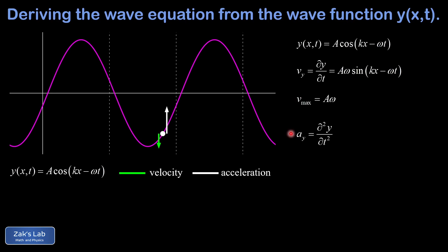Next we take a second derivative of y with respect to time — the rate of change in the velocity — which is the y acceleration. We write del squared y over del t squared. When we differentiate the sine function we get the cosine function, but the chain rule produces another factor of negative omega. So we end up with negative a omega squared cosine kx minus omega t as our acceleration function. The maximum magnitude of acceleration is the coefficient of that sinusoidal function: a omega squared.